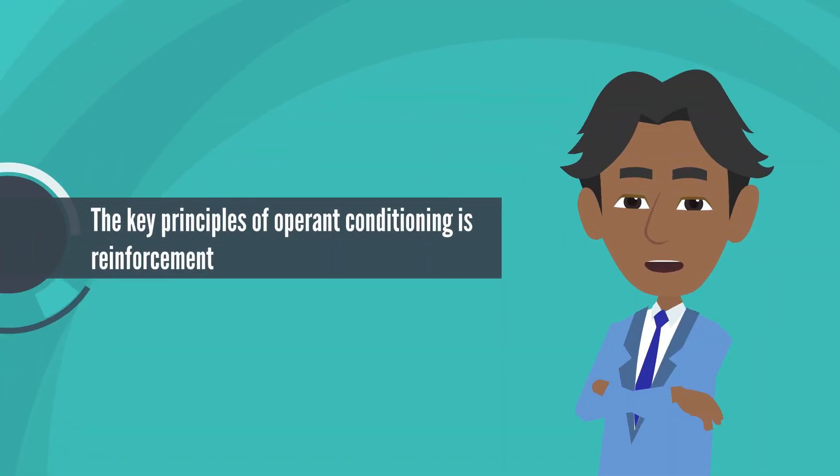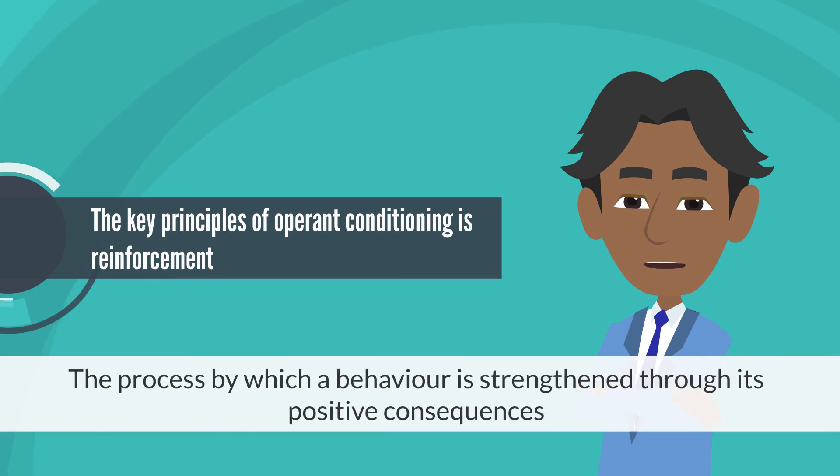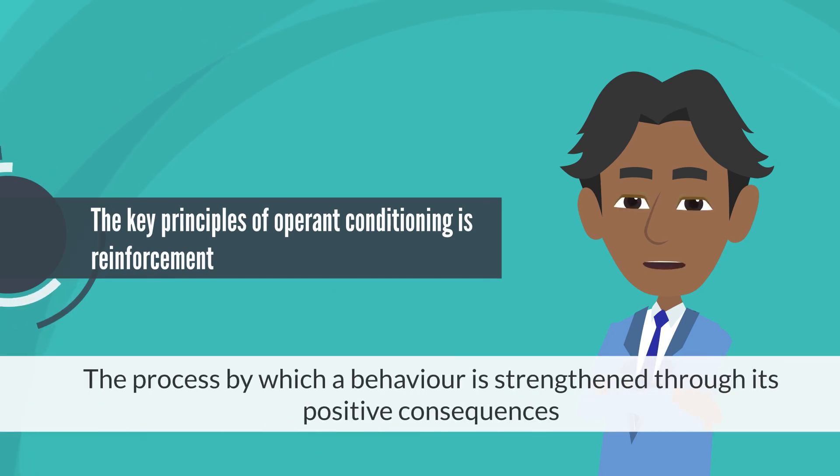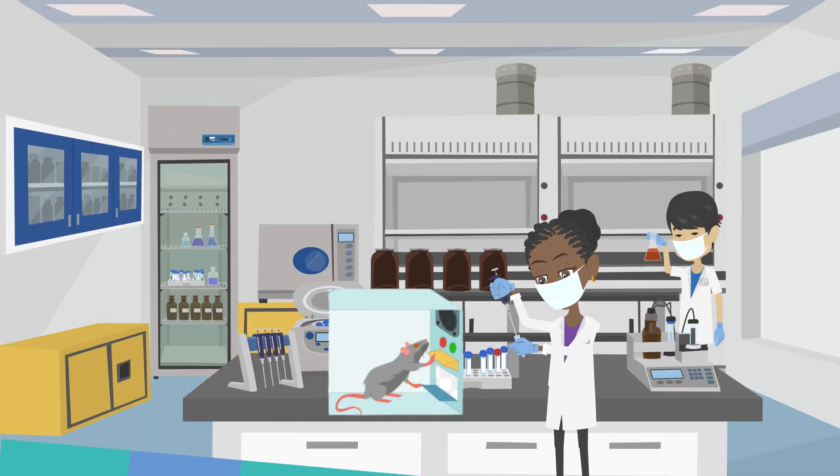One of the key principles of operant conditioning is reinforcement, the process by which a behavior is strengthened through its positive consequences. In Skinner's experiments, this often took the form of food rewards.